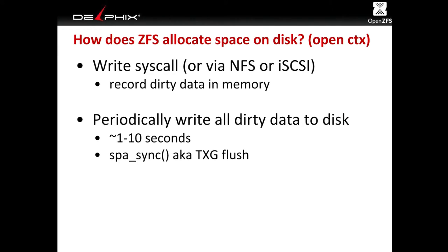We record all this dirty data in memory, and then periodically — about once every one to ten seconds — we flush out all the dirty data in the system onto disk. We might have accumulated like a gigabyte of dirty data that we're going to write all out. This process is called flushing the transaction group. TXG is an abbreviation for transaction group, and the function that does this is spa_sync.